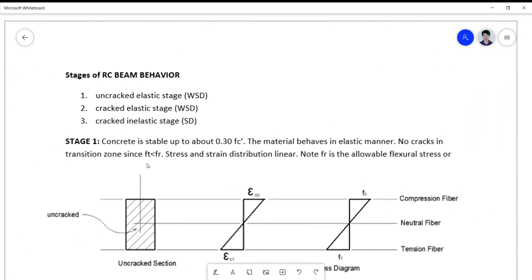So there are three stages as I've mentioned which will define your RC beam behavior. The first is the uncracked elastic stage as shown a while ago on the graph. The second one is the cracked elastic stage, and the third one is the cracked inelastic stage. So these two are still on the elastic stable, and this is inelastic unstable behavior.